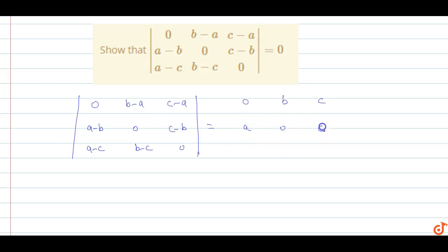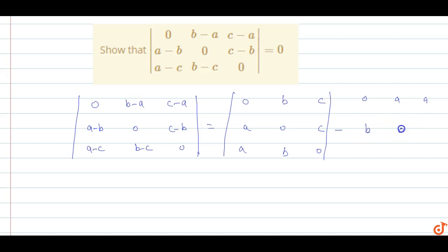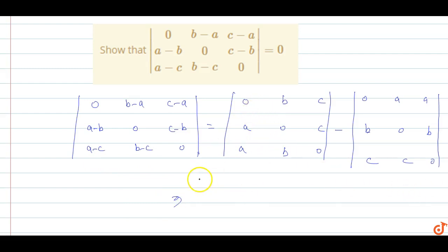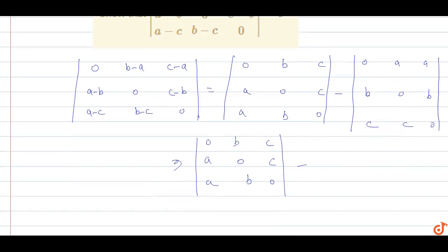We can write this determinant in the form of two determinants. So this equals zero, b, c; a, zero, c; a, b, zero — this determinant — minus another determinant: zero, a, a; b, zero, b; c, c, zero.